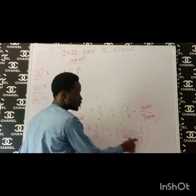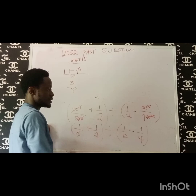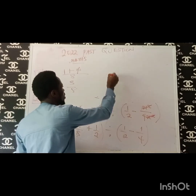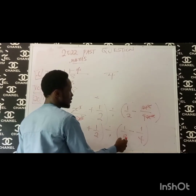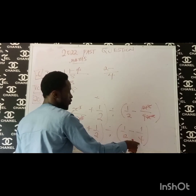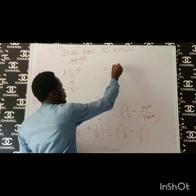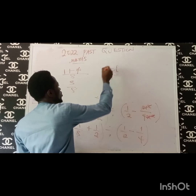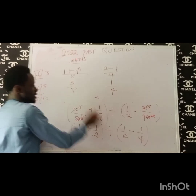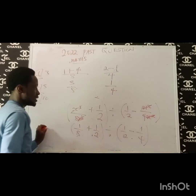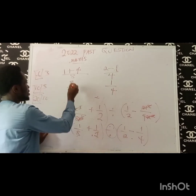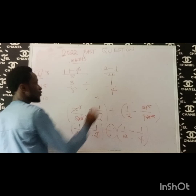Now let's look at the denominator. LCM of 4 and 2 will be 4. So 4 divided by 2 is 2, times 1 is 2 minus. And 4 divided by 4 is 1. So this gives us 1 over 4. So the numerator bracket gave us 5 over 8, and the denominator bracket gave us 1 over 4. What we are supposed to do is division of both of them, so this is 5 over 8 divided by 1 over 4.